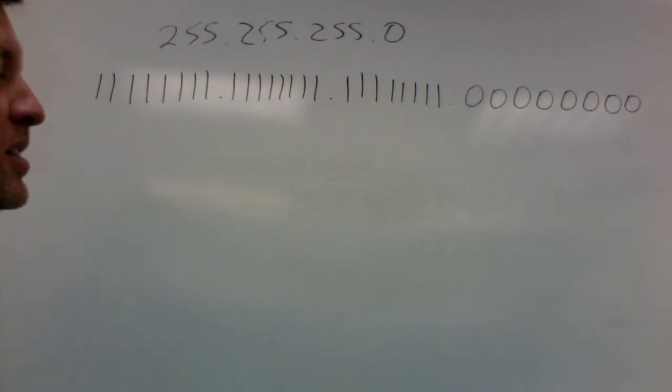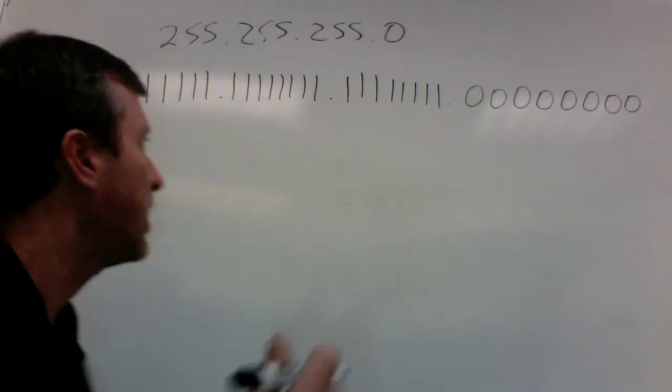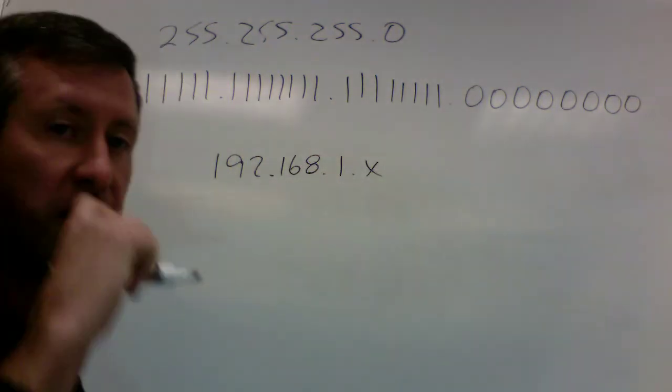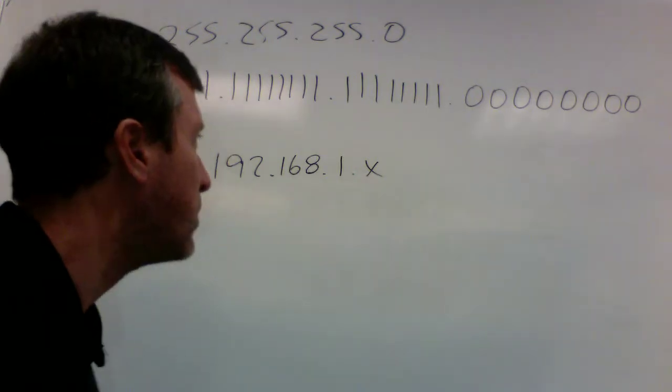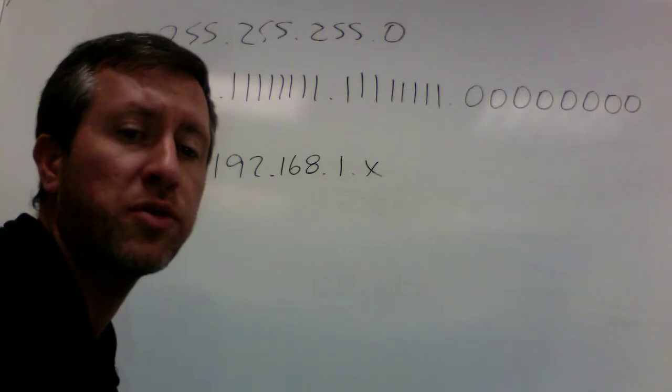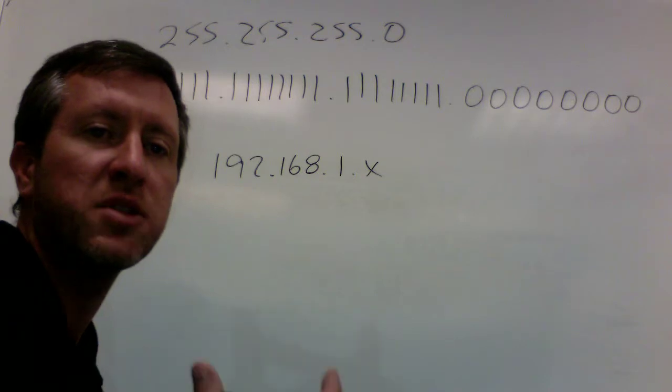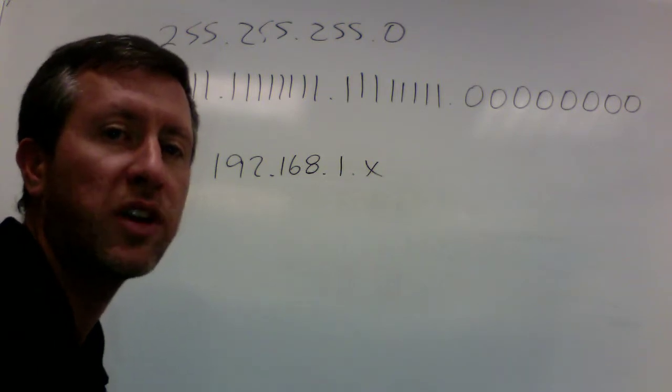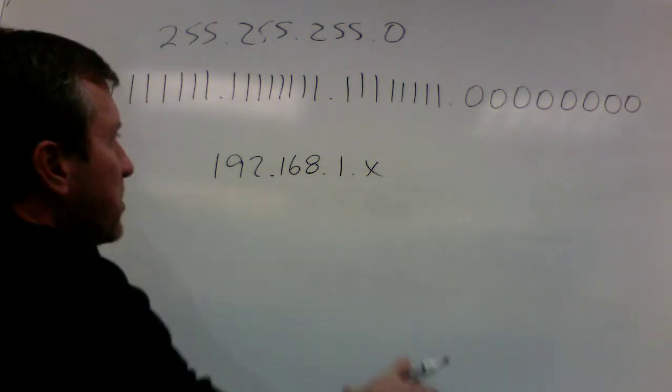So let's say that my network administrator comes to me, or maybe I am the network administrator, and we say, okay, I've got this group of 256 total IP addresses, anything that starts with 192.168.1.whatever, and I need to divide that into two networks. Maybe I've got a finance department and an HR department that need to be able to share this particular network. Well, what I can do is I can actually break that in half and make them two logical networks so that even if I've got them all connected to the same switch, they're not going to be all able to talk to each other.